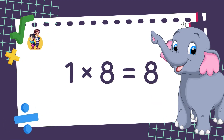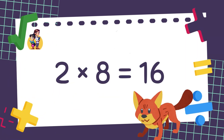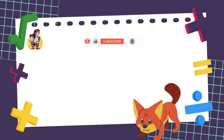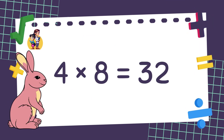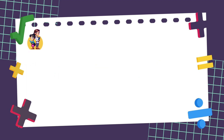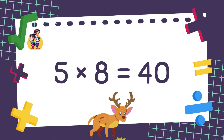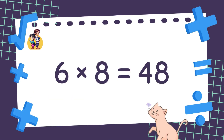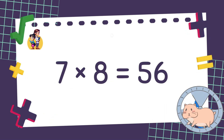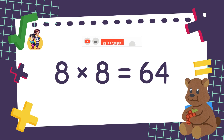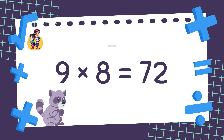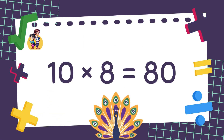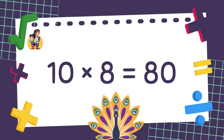1 times 8 is equal to 8. 2 times 8 is equal to 16. 3 times 8 is equal to 24. 4 times 8 is equal to 32. 5 times 8 is equal to 40. 6 times 8 is equal to 48. 7 times 8 is equal to 56. 8 times 8 is equal to 64. 9 times 8 is equal to 72. 10 times 8 is equal to 80. Well done!